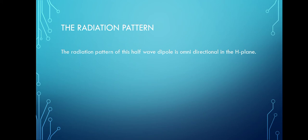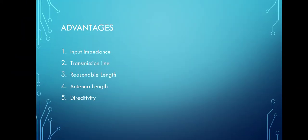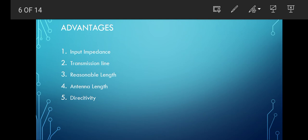Advantages of the half-wave dipole antenna: first, the input impedance of the half-wave dipole antenna is not very sensitive. The transmission line matches well with the transmission line impedance over a reasonable length. The half-wave dipole antenna is accurate to a reasonable length.